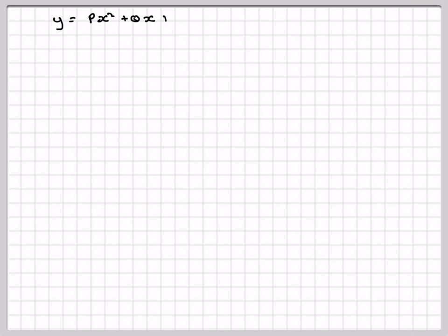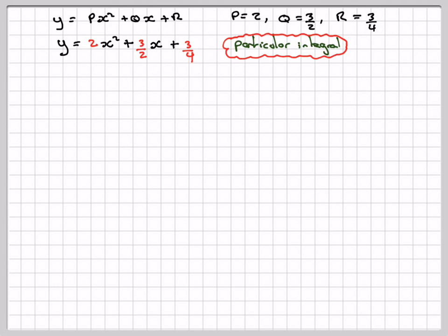So we've got the general particular integral here. p is 2, q is 3 over 2, r is 3 over 4. So we're going to have y is equal to 2x squared plus 3 over 2x plus 3 over 4.